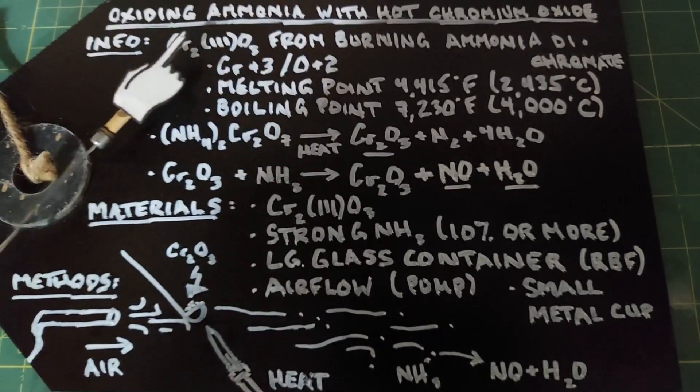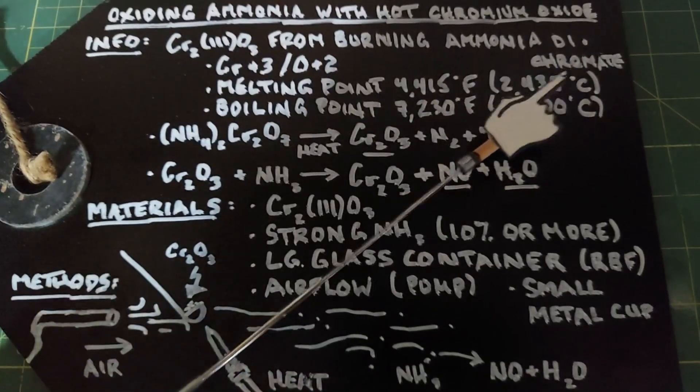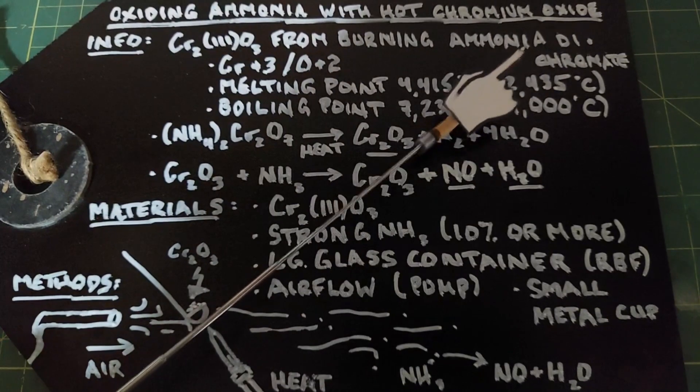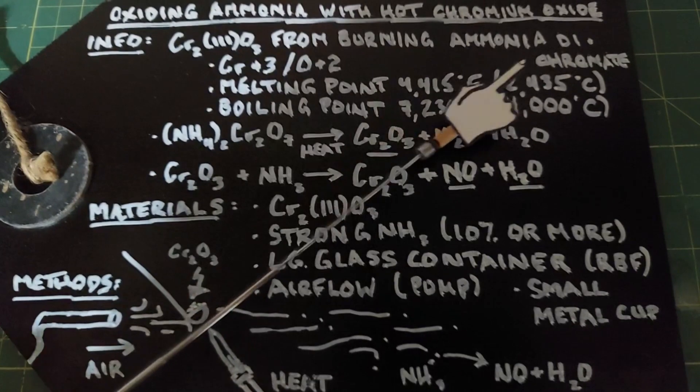We have a balance of electrical charges here and we're going to get this chromium oxide from burning ammonium dichromate. Since I've already done this in a previous video, you can go see that video for what it looks like and what happens when you burn ammonium dichromate.